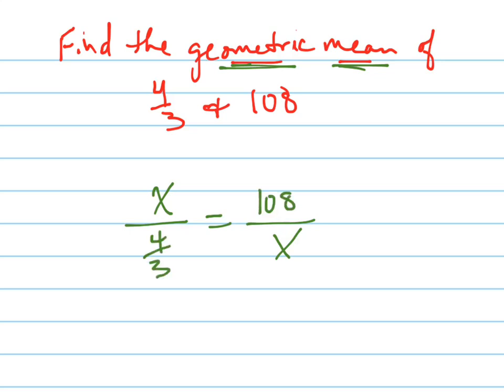You can put them either way, either place you want, it doesn't matter. But what's going to happen is when I cross multiply, I'm going to get x squared equals 108 times 4 thirds.